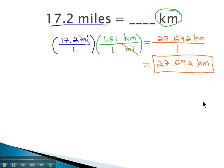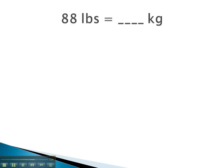Let's try one more. Here, we're changing 88 pounds into kilograms. To do this, we first make the 88 pounds into a fraction by putting the 88 pounds over 1, and then start setting up our conversion factor.